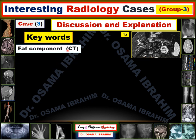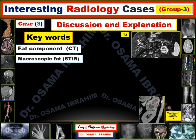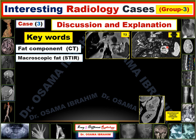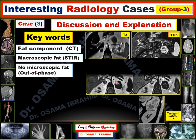The key words for Case 3: the fat component on CT — in the sagittal reformat image, the lesion in the superior aspect of the kidney shows multiple foci of fat signal within it. This is the first key word helping in diagnosis. The second key word is macroscopic fat, which appears suppressed on the STIR MRI image. The lesion is at the left adrenal gland and shows fat suppression, representing a fatty component.